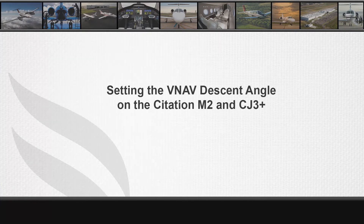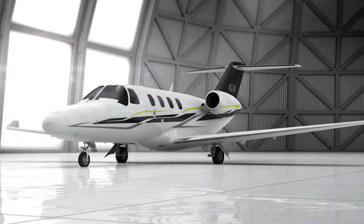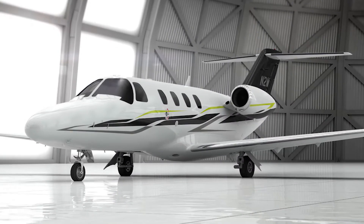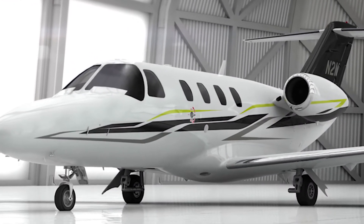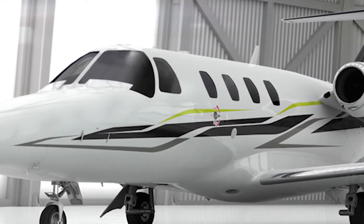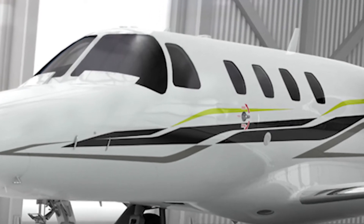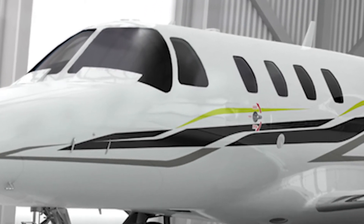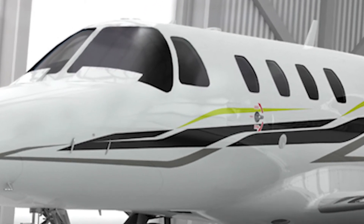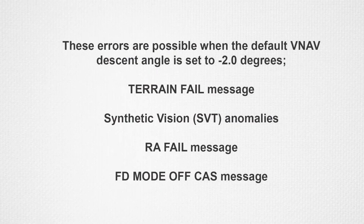Today we'll discuss the G3000 VNAV Descent Angle Settings. Setting the VNAV Descent Profile to a value of negative 2 degrees can cause multiple issues with the flight displays. Negative 2 degrees is the shallowest default descent angle allowed with the G3000 system in the Citation M2 and CJ3+. The following errors are possible when the default VNAV Descent Angle is set to negative 2 degrees.